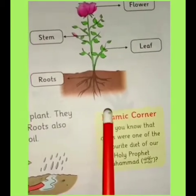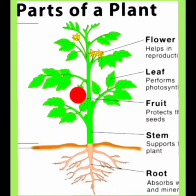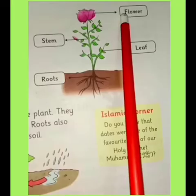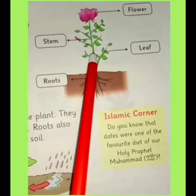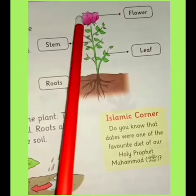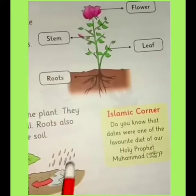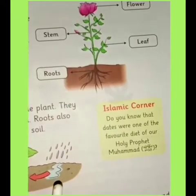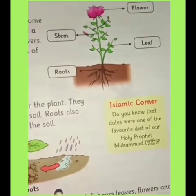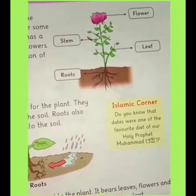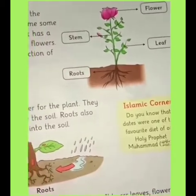A plant has a root, stem, leaves and flowers. Paudhe mein mojood jad, tana, patte aur phool hain. Let us read the function of each part. Aaiye hum in tamam hisson ke baare mein padhte hain.